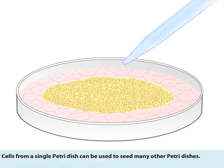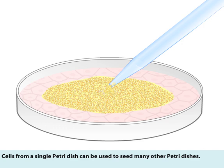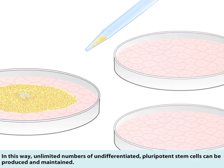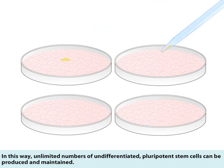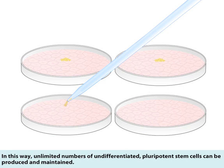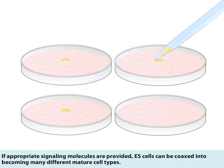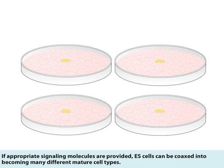Cells from a single petri dish can be used to seed many other petri dishes. In this way, unlimited numbers of undifferentiated pluripotent stem cells can be produced and maintained. If appropriate signaling molecules are provided, ES cells can be coaxed into becoming many different mature cell types.